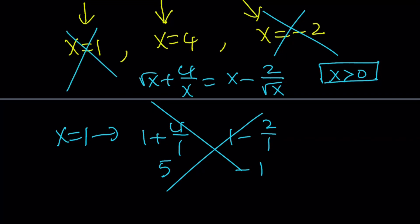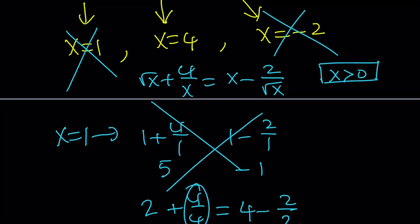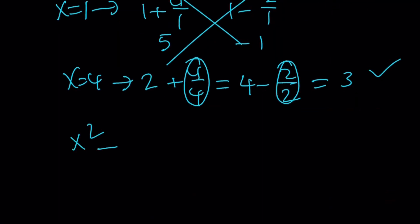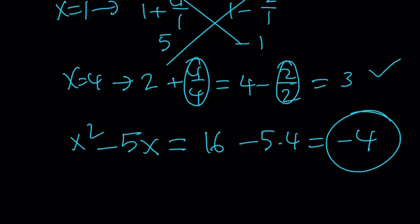So we end up with x equals 4. Let's test it: square root of 4 plus 4 over 4 equals 4 minus 2 over square root of 4. The left side is 2 plus 1 equals 3, and the right side is 4 over 2 minus 1 equals 3. They are both equal to 3 — x equals 4 works and is the only solution. Now evaluating x squared minus 5x: 4 squared minus 5 times 4 is 16 minus 20, which is negative 4. The answer is negative 4.